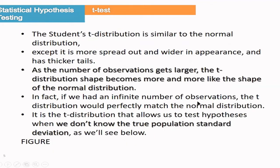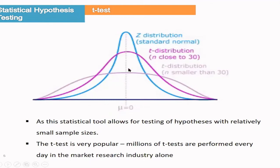What is T-Test? The Student T-Test is similar to the normal test, only it has a more spread and thicker tail. As the number of observations increases, the T-distribution becomes similar to the normal distribution. If you don't know the population standard deviation you can use the T-Test. Looking at the figure, this shows the Z-distribution versus the T-distribution. The T-distribution has a wider tail, and when sample size is less than 30 the tails are wider on both sides.